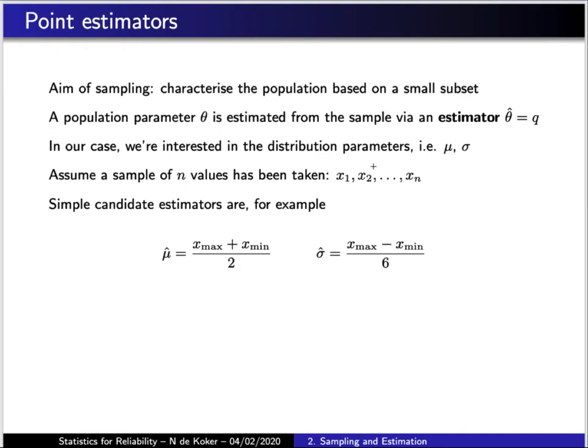The first concept that we need to consider is that of a point estimator. For a given random variable one would have a population which represents all the possible realizations that that random variable can take. We generally want to use parameters to describe and summarize the behavior of the random variable over the scope of its population, but very often we do not know what those parameters are. So the idea is to take a sample which represents the population and then determine the parameters for the sample, which we then use to estimate what the parameters of the population would be. Those parameters are then referred to as point estimators.